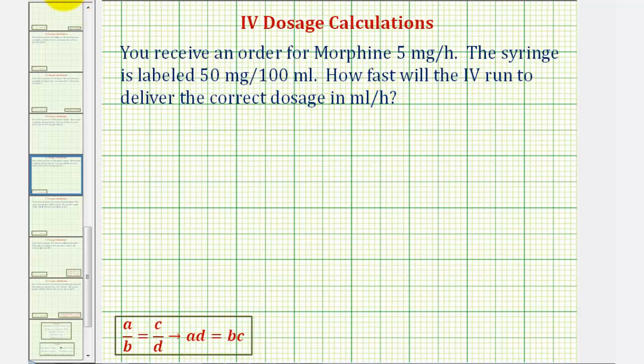We'll solve this using a proportion. We'll compare the number of milligrams to the number of milliliters. We'll begin with a given rate of 50 milligrams per 100 milliliters.